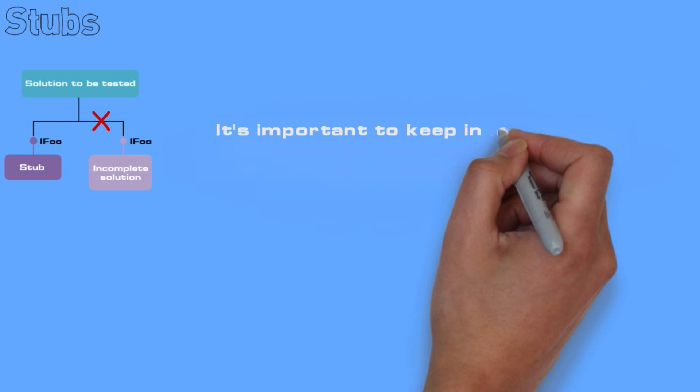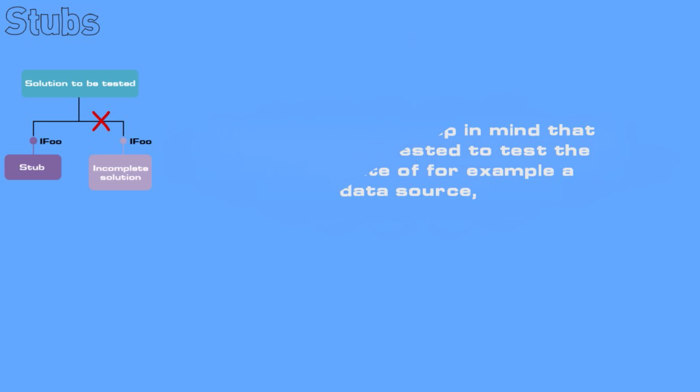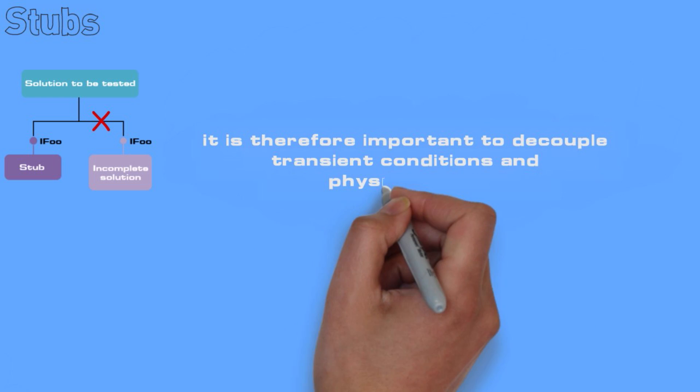It's important to keep in mind that we are not interested to test the physical state of the example data source. It is therefore important to decouple transient conditions and physical state.